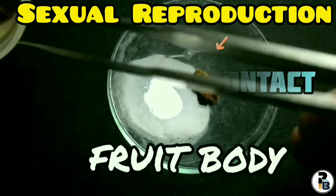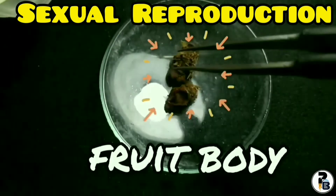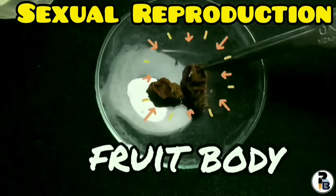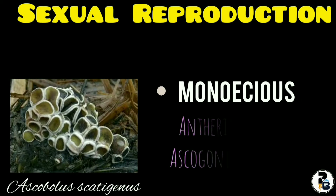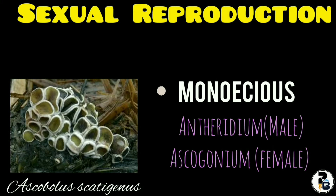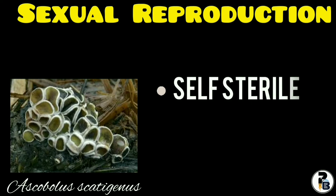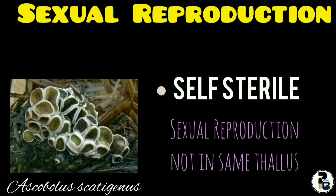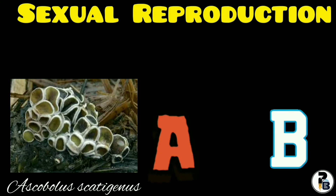The ultimate product of sexual reproduction is an apothecium. Ascobolus catigenus is a monoecious form that is capable of bearing both antheridia and ascogonia — these are the male and female sex organs — but it is a self-sterile form, that is self-incompatible, because sexual reproduction does not take place in a single thallus. This species shows two complementary strains, A and B.